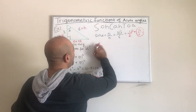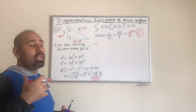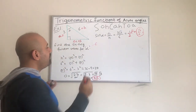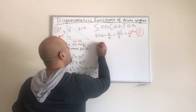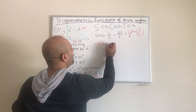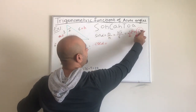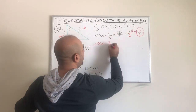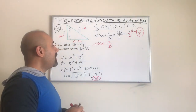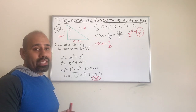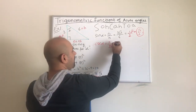Once we have the sine, let us write the reciprocal of the sine, which is the cosecant. Cosecant of alpha is just the reciprocal of the sine. If sine is radical 3 over 2, then cosecant is 2 over radical 3. However, we cannot have a radical in the denominator, so we need to rationalize.